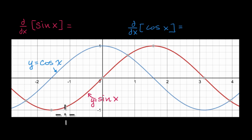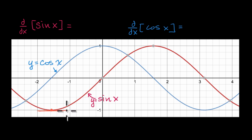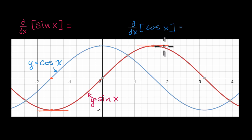So let's start with sine of x. The derivative can be viewed as the slope of the tangent line. For example, at this point right over here, it looks like the slope of our tangent line should be zero. So our derivative function should be zero at that x value. Similarly, over here, it looks like the derivative is zero — the slope of the tangent line would be zero — so whatever our derivative function is at that x value, it should be equal to zero.